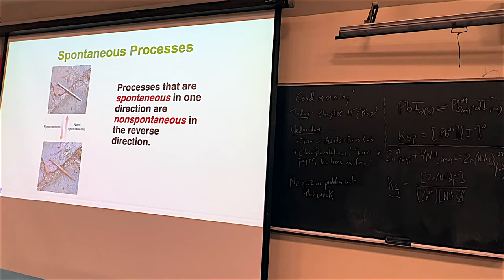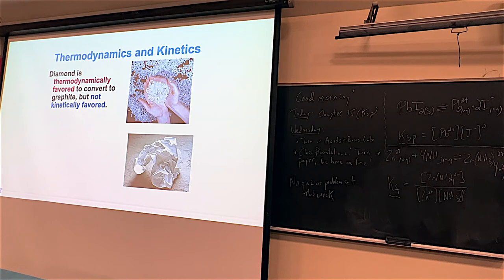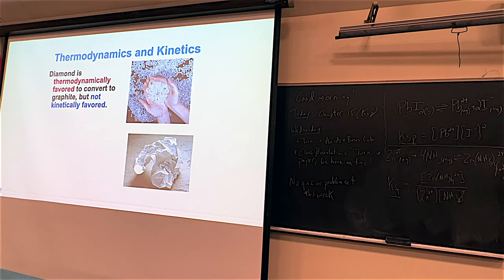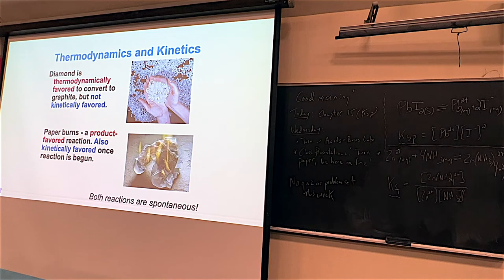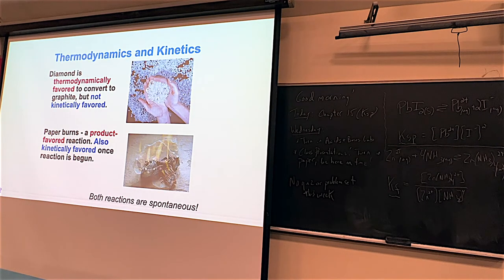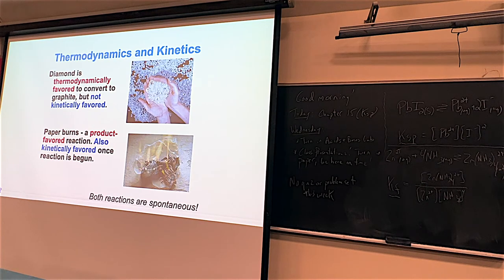When I dropped the papers, that was spontaneous — easy. Putting them back in order took time and effort — non-spontaneous. Some reactions are supposed to be spontaneous but have very slow kinetics. Diamonds to graphite will happen but will take a gazillion years. Paper, on the other hand, once you spark it, it's gone instantly. Both are spontaneous reactions, but their timeline is completely different. That's why in this chapter, spontaneous just means it will occur, not when.